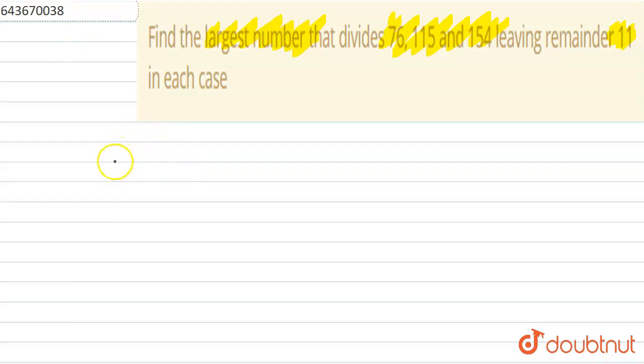So we have 76. If we subtract 11 from 76, we cancel out the remainder, so we get answer 65. Similarly, we'll subtract 11 from 115, we will get 104. And likewise, we subtract 11 from 154, you get the answer 143.